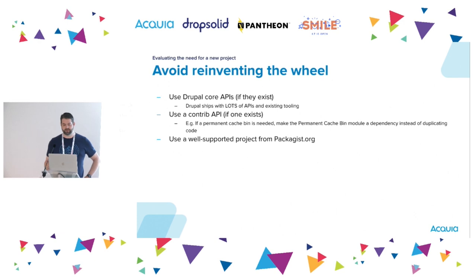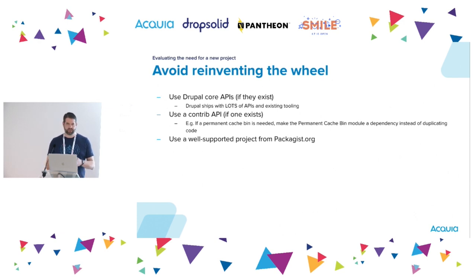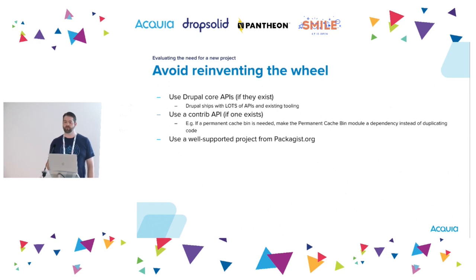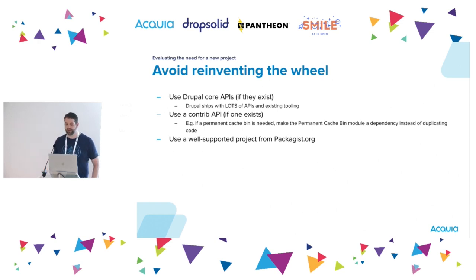There are also contrib modules that provide APIs your module can leverage. In fact, some modules only provide APIs for other modules to use. In Drupal it's 100% okay — and often expected — that one module have a dependency on another. We also have the larger PHP community to draw from, with a plethora of open source projects available on Packagist. If your module needs a CSV generator, you definitely don't need to code your own.